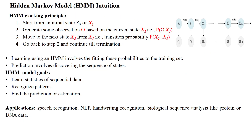The HMM works based on starting with initial state s0, which is denoted as x1 here. This is the initial state we start with. It generates some observation — you can see o1 is generated by the current state x1. Then we move to the next state by using the transition probability from i to j, where i is 1 and j is 2. This is denoted as the probability of the next state given the current state.